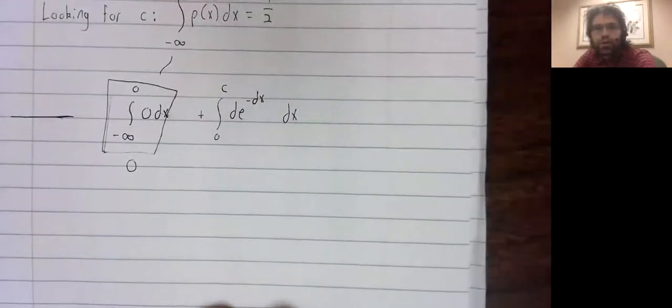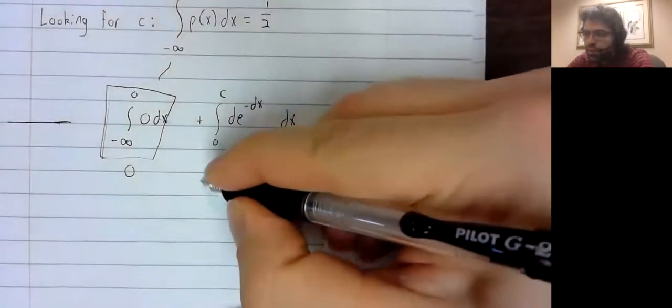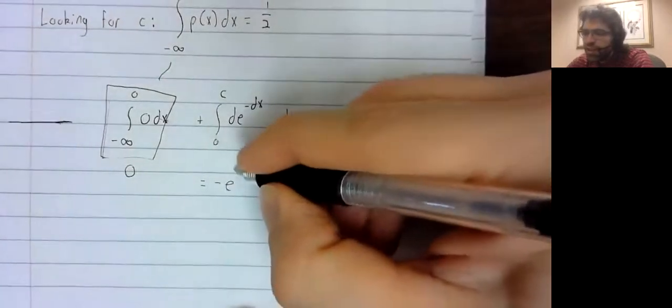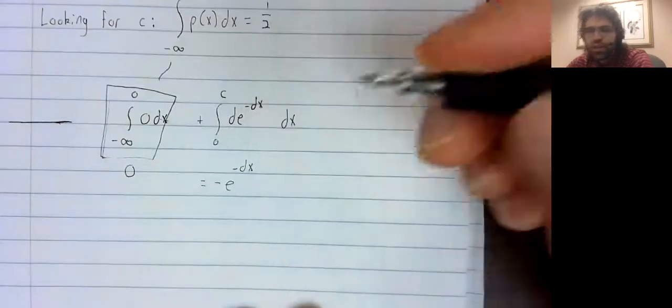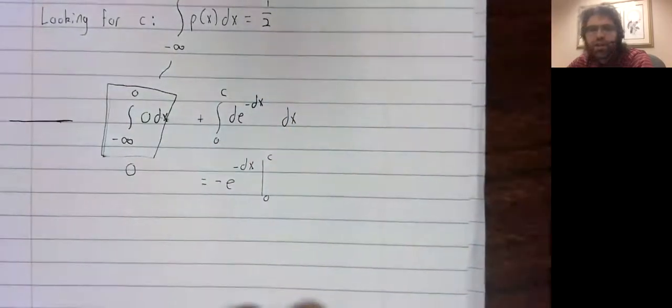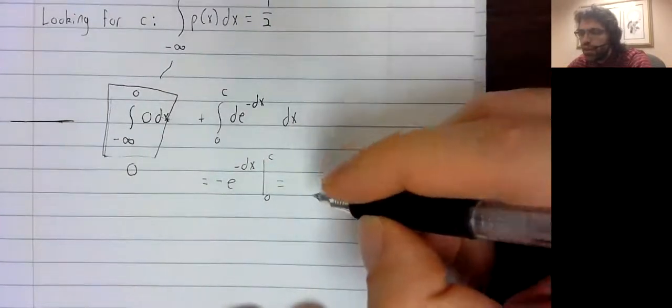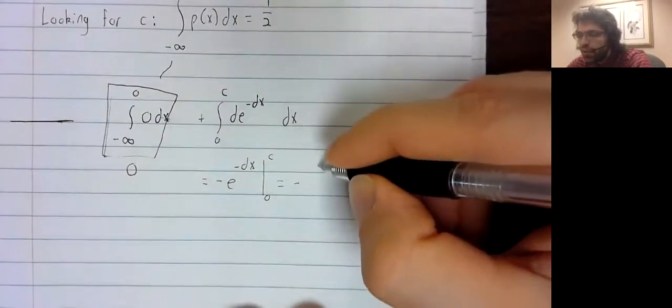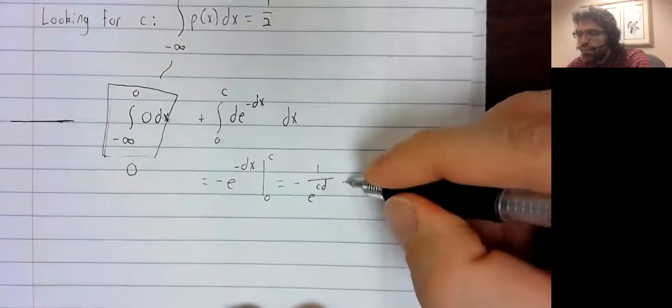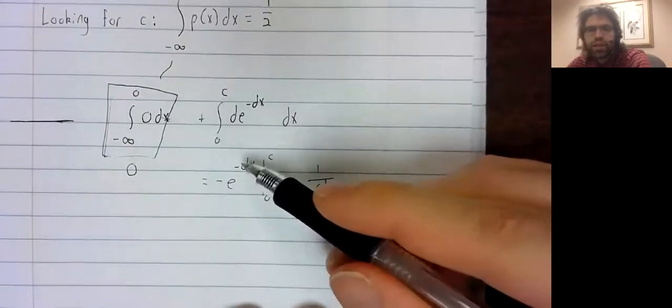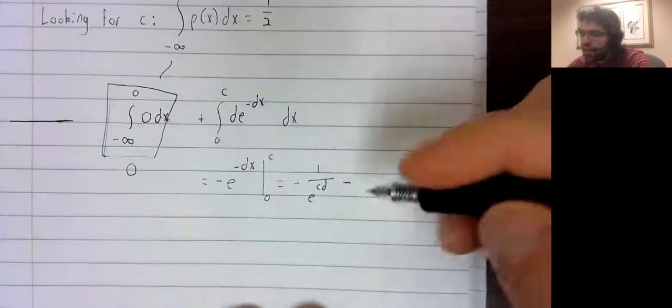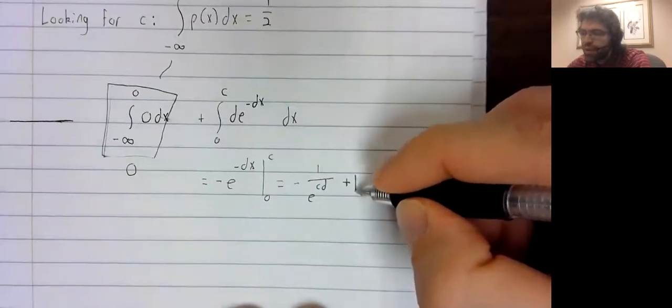Going over here, the antiderivative of this is negative e to the negative DX. We evaluate from zero to C, so that's negative 1 over e to the CD. When we stick zero in here, e to the zero is one. We're subtracting a negative, so that's positive.